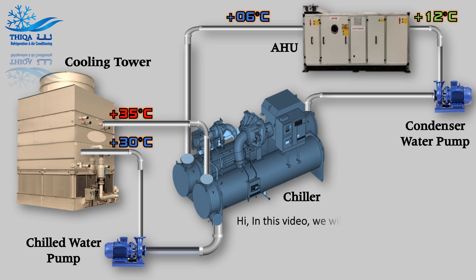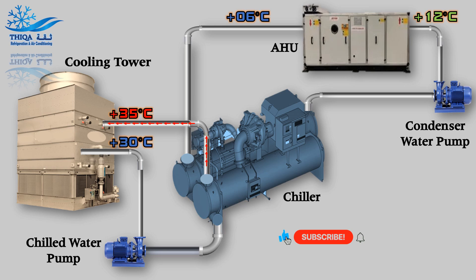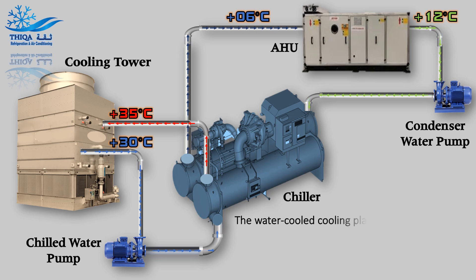In this video we will explain the basic operating principles of a water-cooled chiller plant. A water-cooled cooling plant consists of five pieces of equipment.